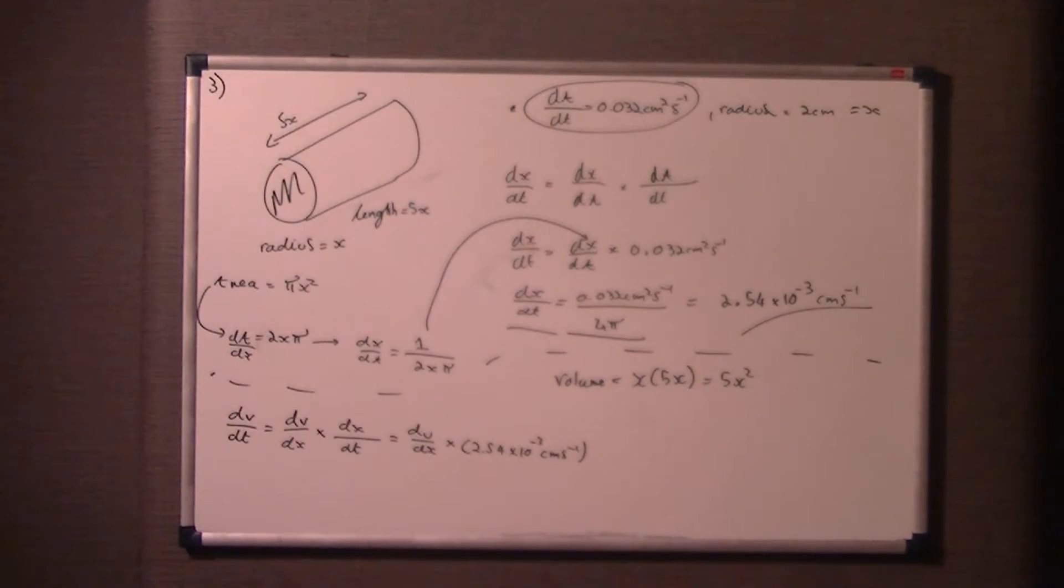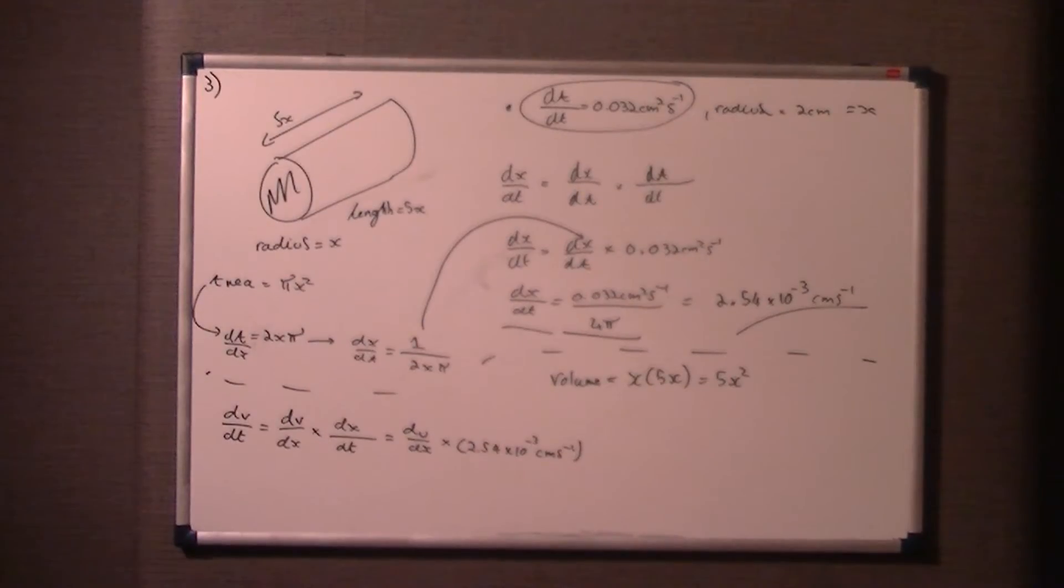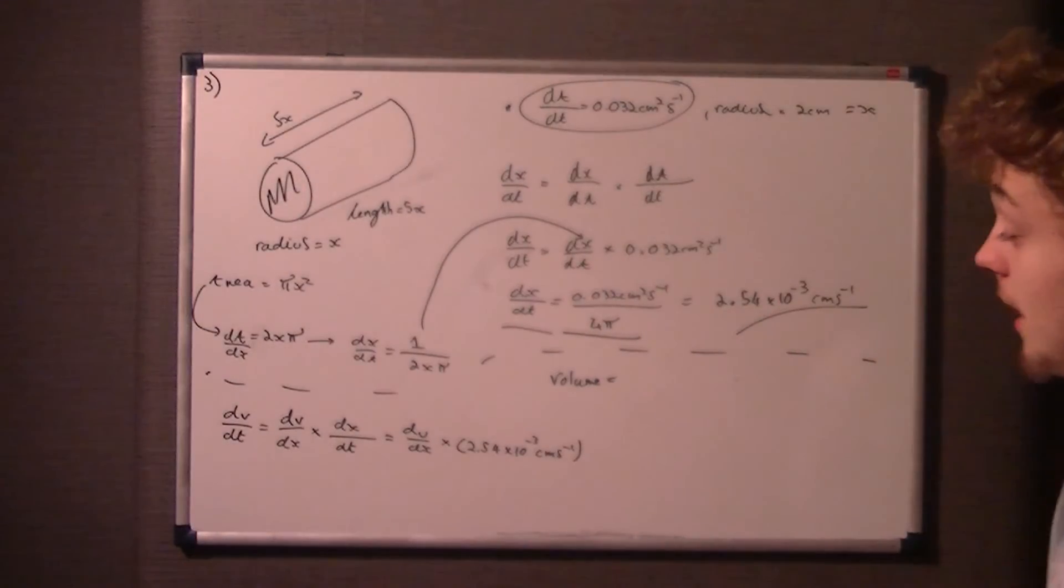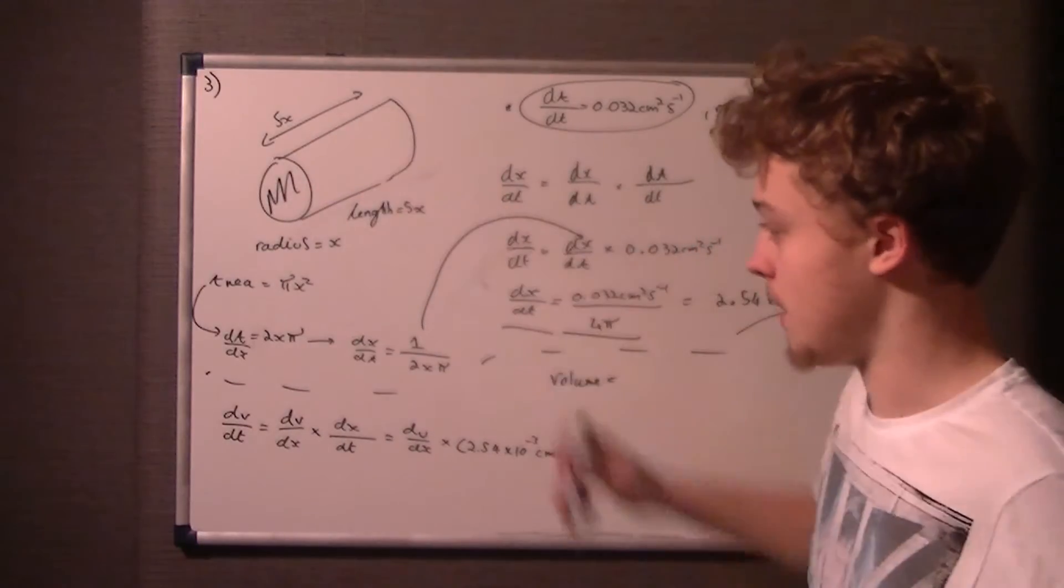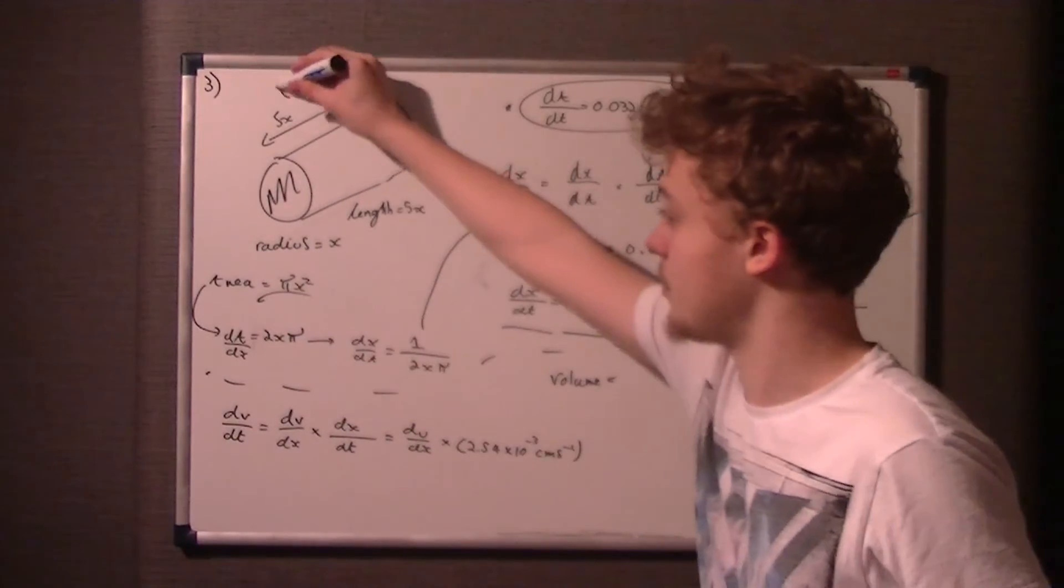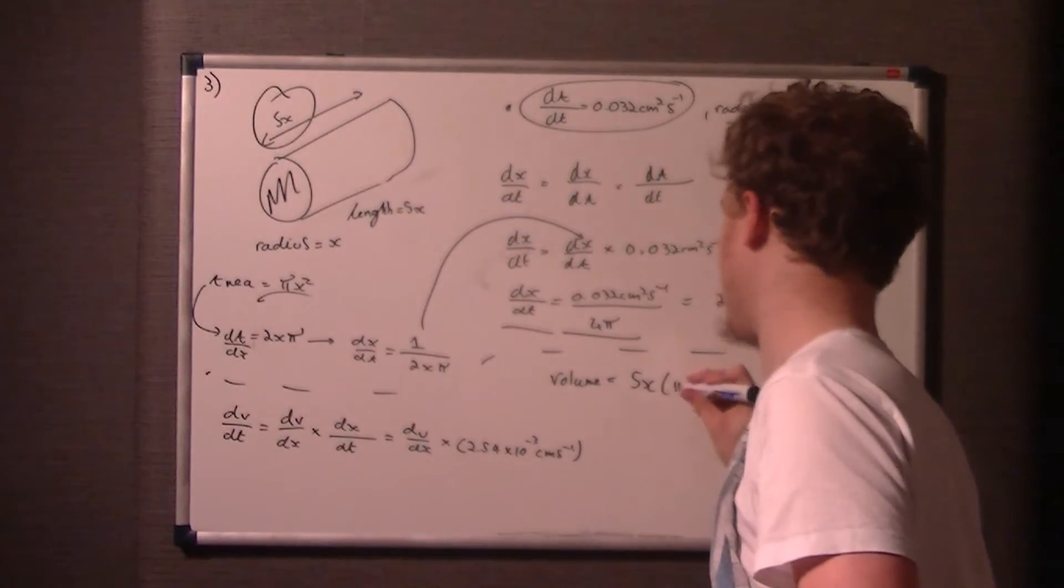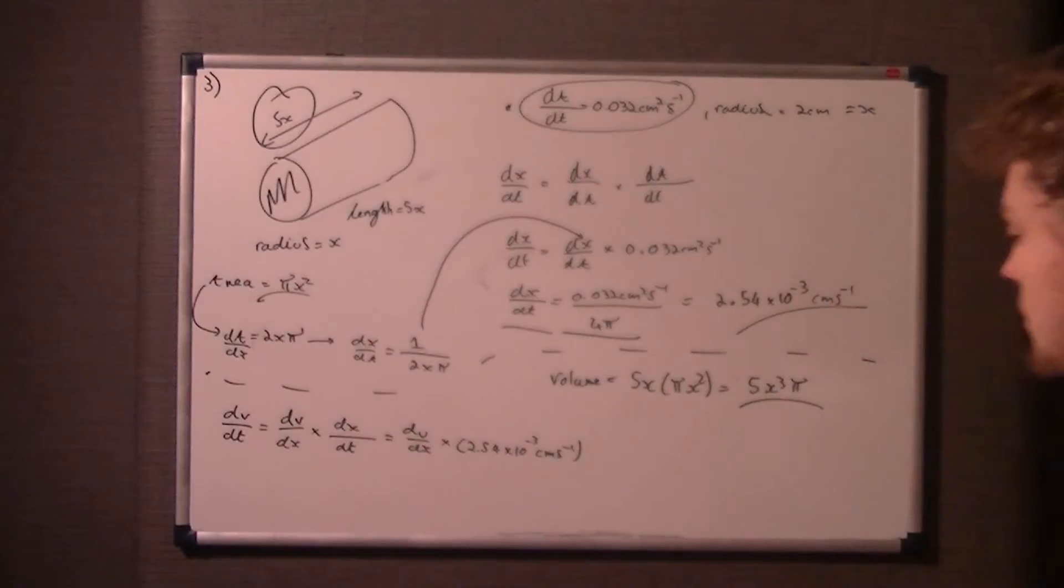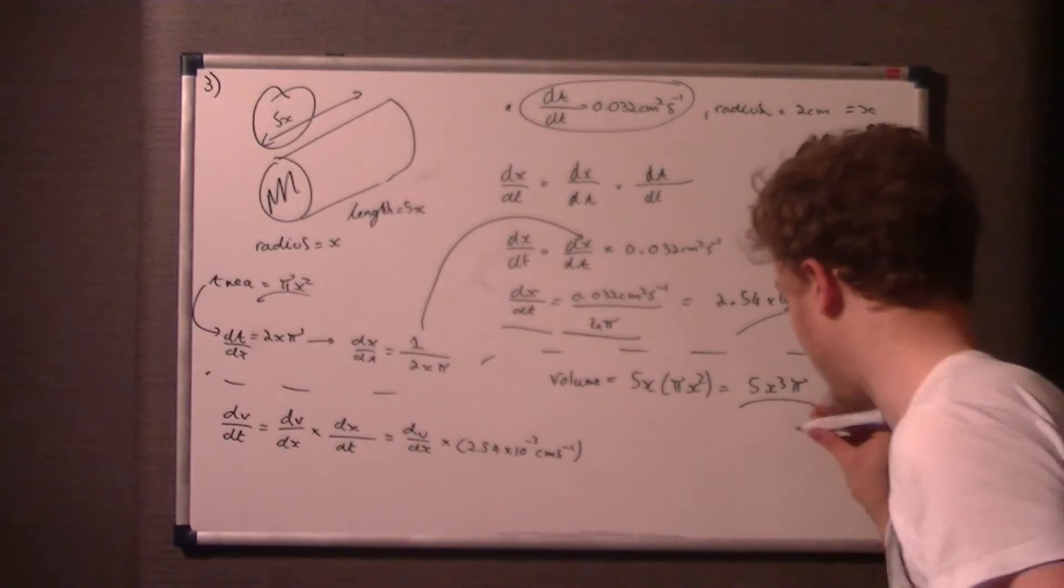The cross-sectional area times the length, I really should listen to myself. So it's just πx² times 5x. I'm not sure if that edit quite works. Well basically, I didn't state the volume equation properly. The volume is cross-sectional area times the length. So it's the area which is πr² or πx² times the length which is 5x. So therefore, we just times 5x by πx² or x²π. So that obviously gets us 5x³π. So as long as I can calculate the volume, we should be fine. So that's v.